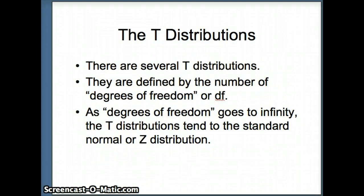So there are several t-distributions, sometimes called the student t-distribution, after the statistician who developed the idea. These t-distributions are defined by their degrees of freedom, sometimes called df. And as the degrees of freedom goes to infinity, the t-distributions tend to the standard normal. So as df gets very large, the t's become closer and closer to the z-distribution.